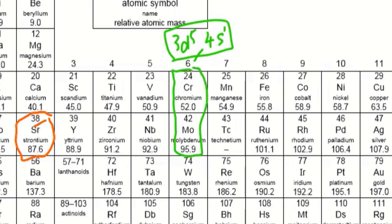So MO is directly below chromium, so it will likely have the same configuration, i.e., it's likely to have 4D5, 5S1.